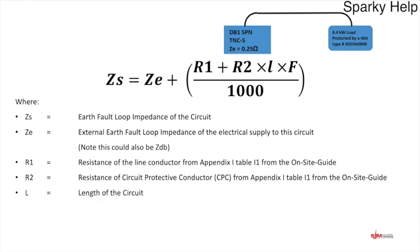L is the length of the circuit — given from the previous video. You can measure it from a scale drawing or work it out after installation. Remember this formula can also be rearranged to work backwards and find out what the length of your cable happens to be.